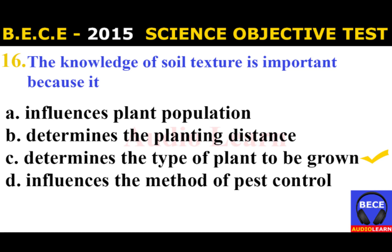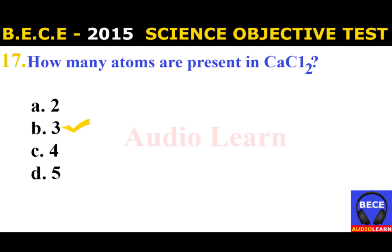Number 16: The knowledge of soil texture is important because it A. Influences plant population, B. Determines the planting distance, C. Determines the type of plant to be grown, D. Influences the method of pest control. The answer is C. Determines the type of plant to be grown.